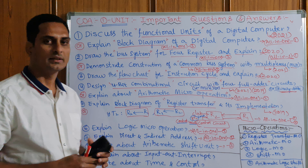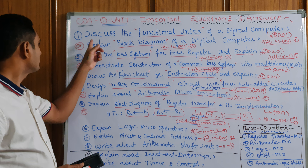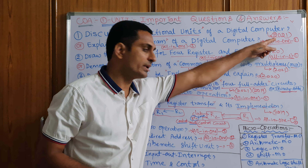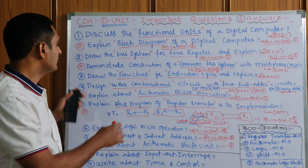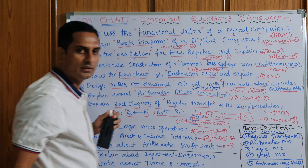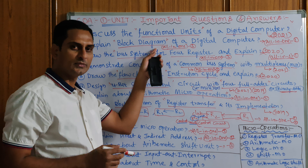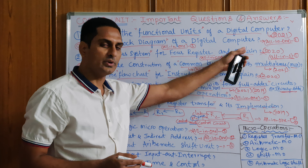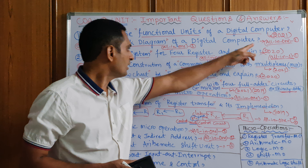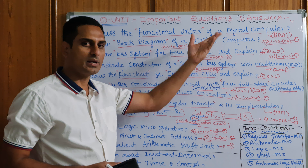I will provide every link there. The question from the first unit given is: discuss the functional units of a digital computer — in the 2021 paper this was given. The keyword is 'functional units of digital computer.' Similarly, 'draw block diagram of a digital computer' — same thing, little bit changed — was given in All-in-One model paper one and model paper three also.